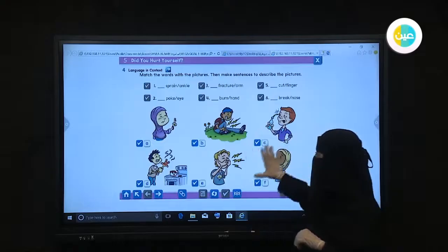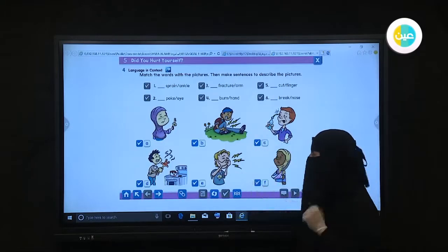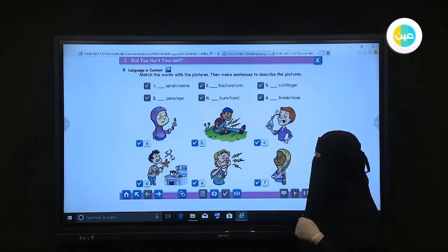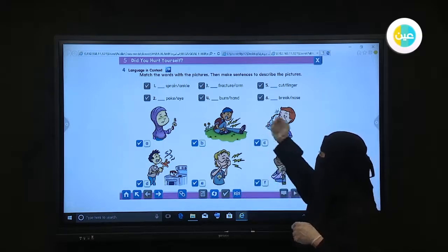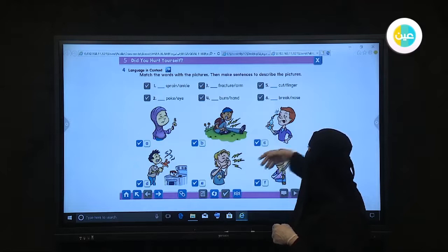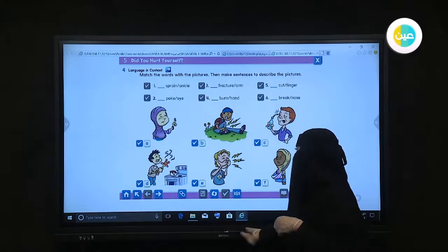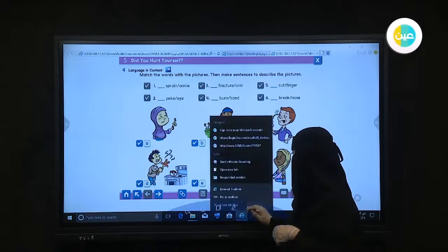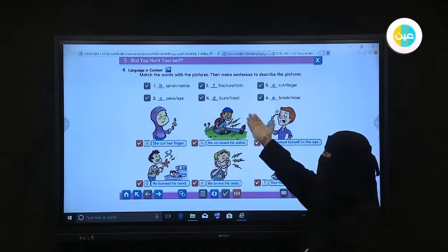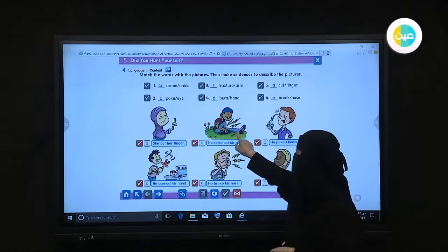We have six pictures here. All of them are talking about hurt. We have two girls and four boys and we have six sentences. We should match the statements or the sentence with the picture. Match the words with the picture then make sentences to describe the pictures. Sprain ankle, fracture arm, cut finger, poke eye, burn hand, and break nose. What do you think is the suitable answer for every picture? Okay, look at the answer.